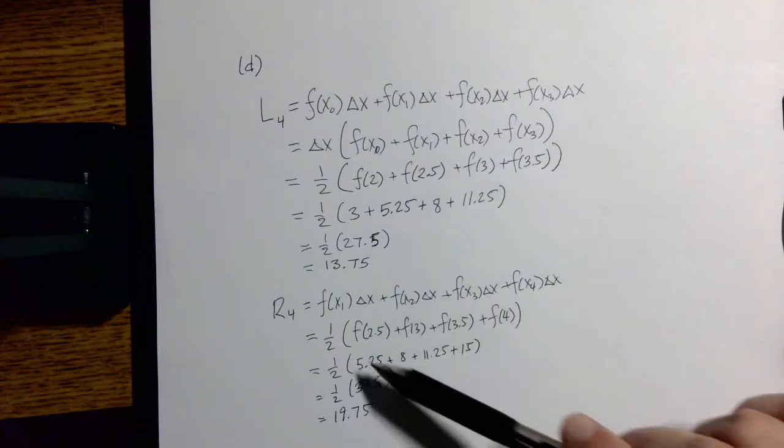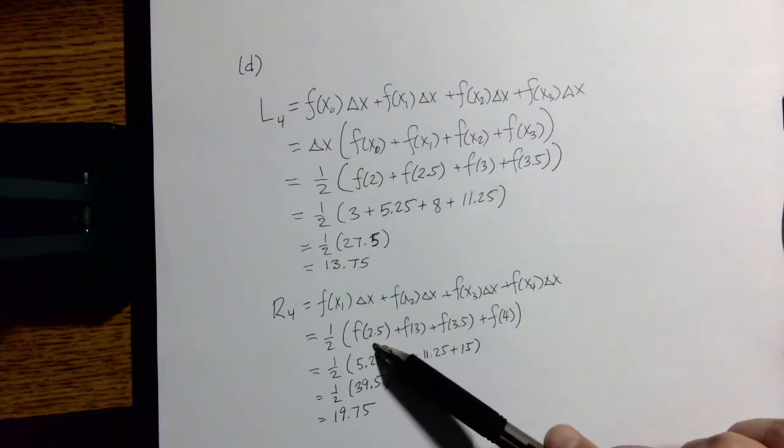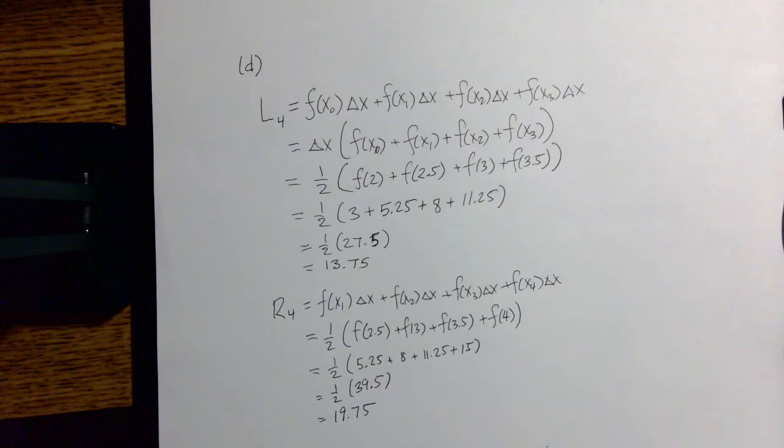For the right it's similar but we start with 2.5 and we end with 4, and we get 19.75. So 13.75 and 19.75 in whatever units of area are involved here. Notice in this case the left hand sum gives us a smaller value than the right hand sum.